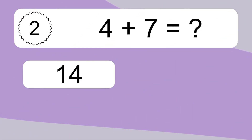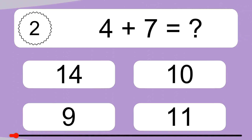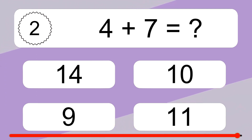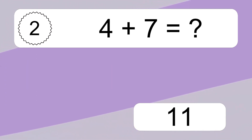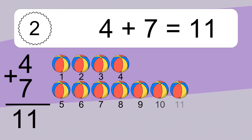4 plus 7 equals what? 4 plus 7 equals 11.